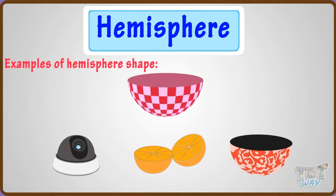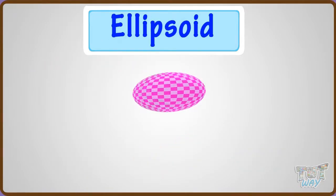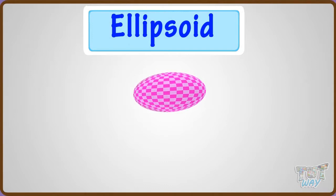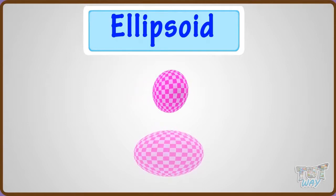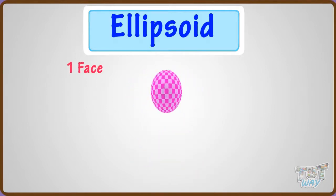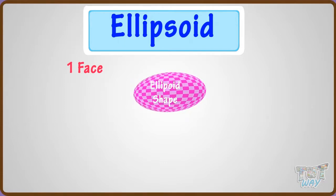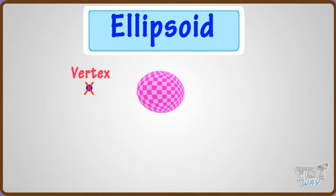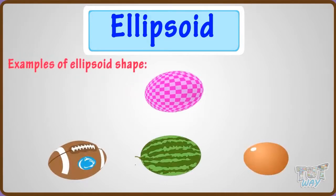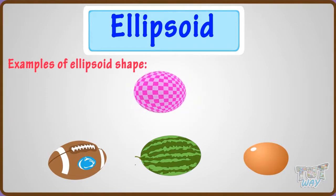Now, let's learn another interesting shape — ellipsoid. An ellipsoid is a 3D shape resembling a flattened sphere. It has only one face, which is its surface in ellipsoid shape, and it has no vertex and edge. These are a few objects which are ellipsoid in shape.